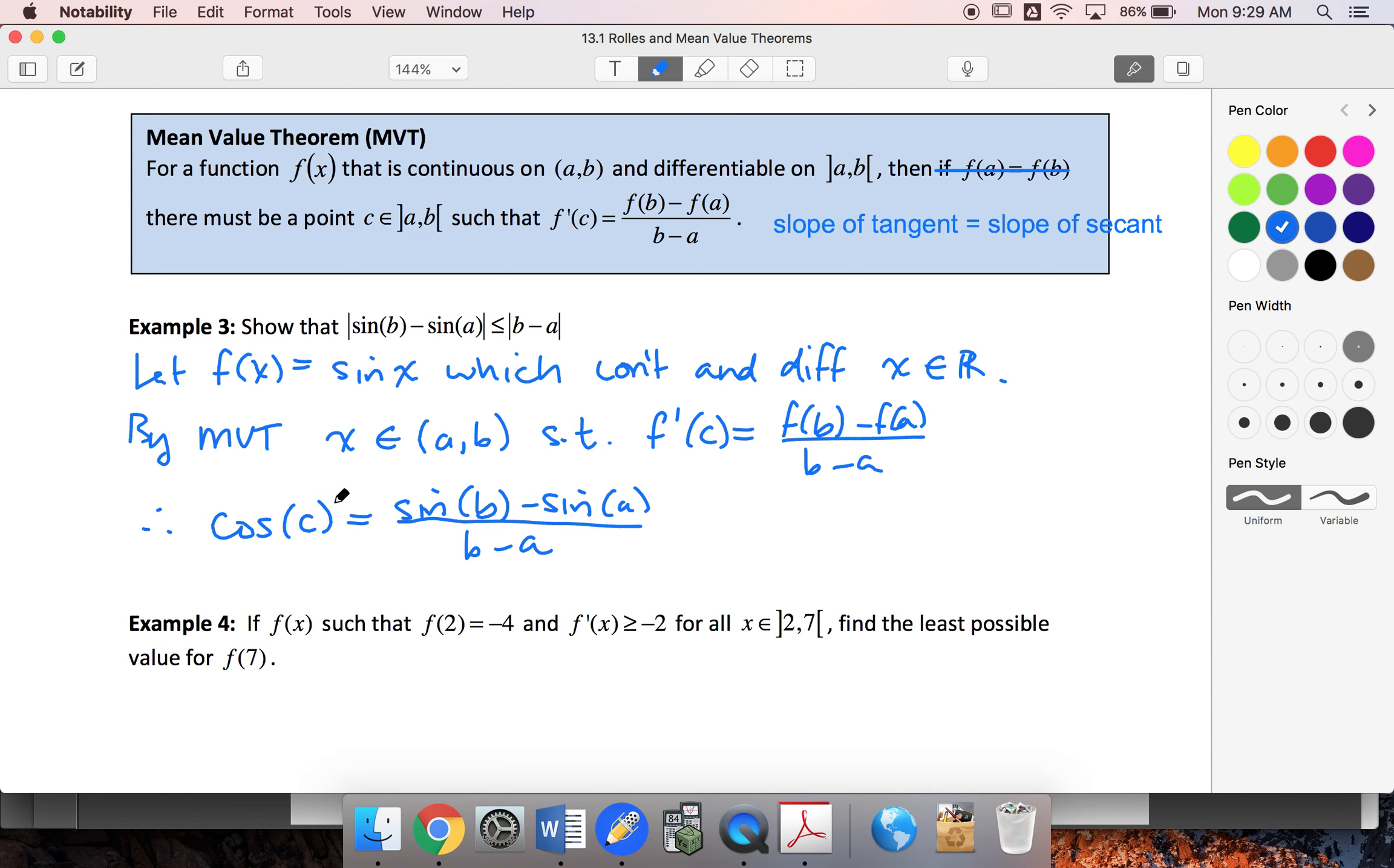If I take absolute value of both sides - right now this is between -1 and 1. If I take the absolute value, then the result will be between 0 and 1.